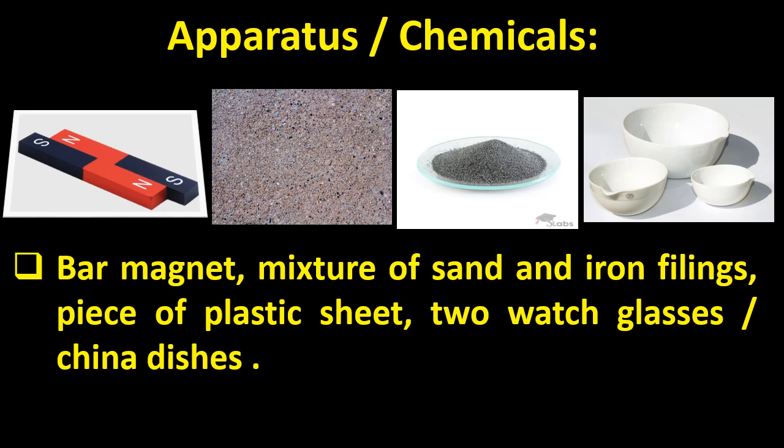Now what you have to do is make a mixture of sand and iron filings so that we can easily observe whether the bar magnet will attract the sand or attract the iron filings. So basically these are the apparatus or we can say the chemicals to carry out this practical.